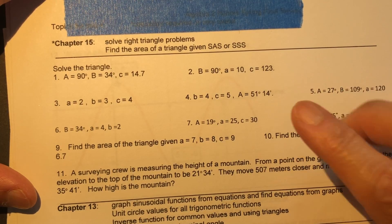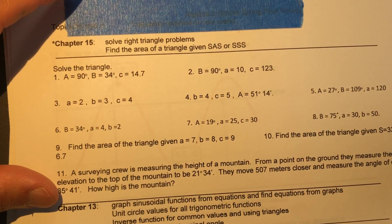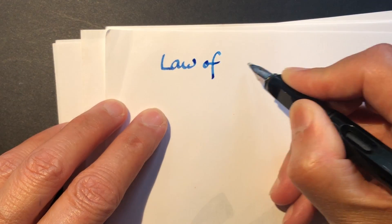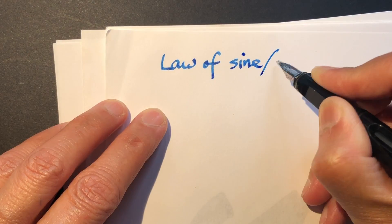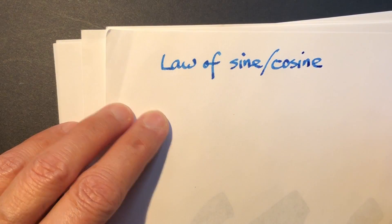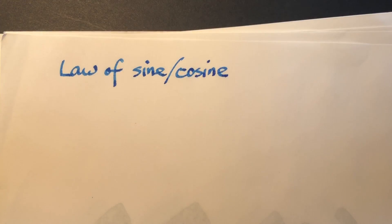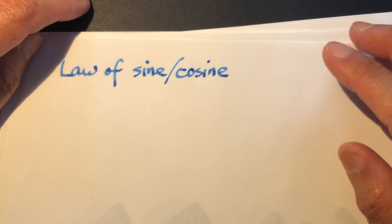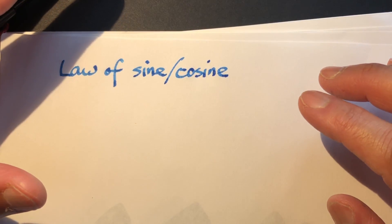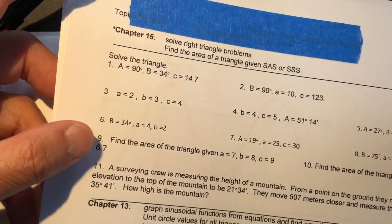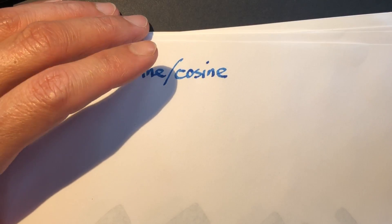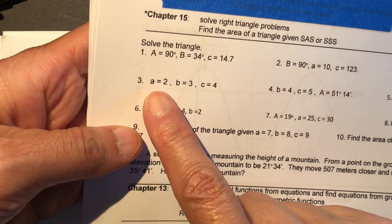Hello dear friends. In this video we work on the law of sine and cosine — when we use the law of sine and when we use the law of cosine. There is no fixed rule that's easy to memorize like SSS or SAS. When you understand the logic in the problem, it is much easier to solve. So I will give you an example.